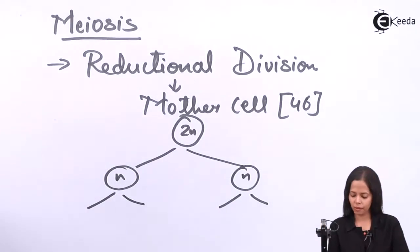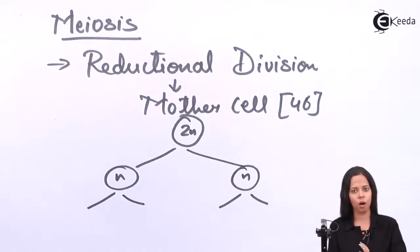Now over here in the diagram, you have seen that mother cell is 2N where the daughter cell has become N. N means haploid condition and 2N means diploid condition. So mother cell which is diploid is getting half. Their chromosome is half now in daughter cell.